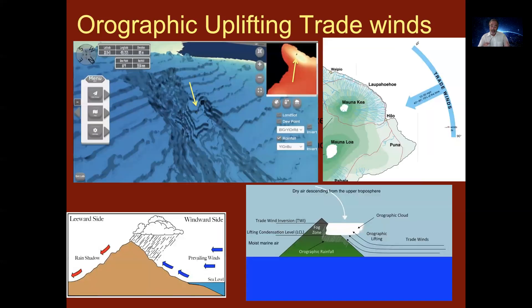Examples of orographic uplift might be what you'd encounter on the east-facing part of Mauna Kea or Hualalai. The upper left example shows the avatar sitting on the slopes of Hualalai, right in the bullseye of the orographic uplift effect. The air hits the Kohala volcano, rises up, and you get a rainfall maximum.